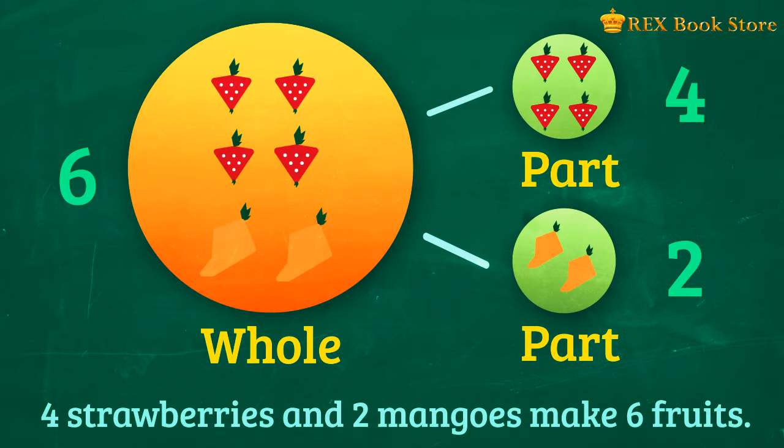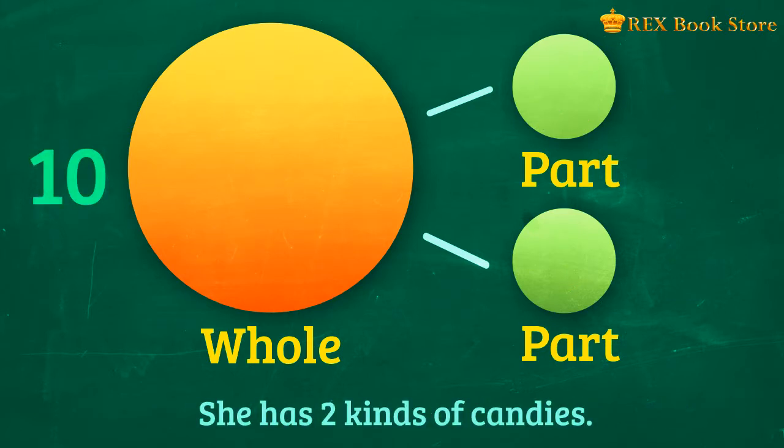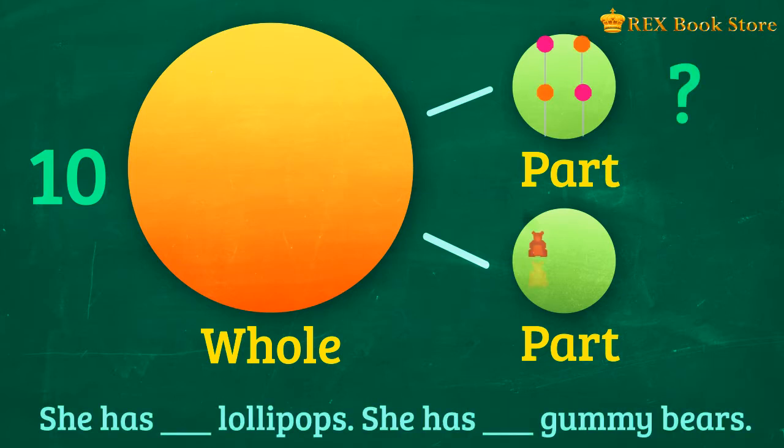Let's try another one. Aimee has 10 pieces of candy. She has 2 kinds of candies, lollipops and gummy bears. Can you count how many lollipops she has?